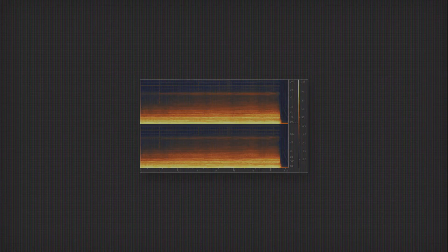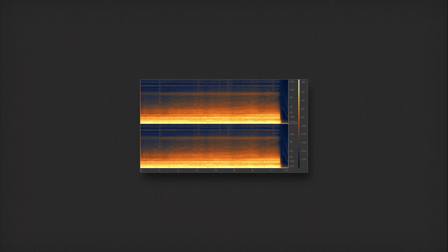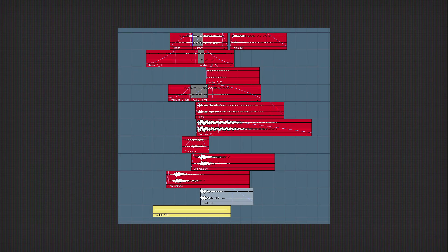And now the two stars. By using a variety of different convolution reverbs and by layering the edits along with some additional sound effects I have created a black hole collapse.